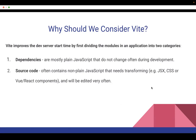Vite categorizes the modules in an application into two categories. The first is dependencies — third-party dependencies that you don't frequently change, and which are mostly plain JavaScript. For these, Vite pre-builds them using esbuild, which is written in the Go language. Because dependencies are pre-built, the build is 10 to 100 times faster compared to other bundlers.